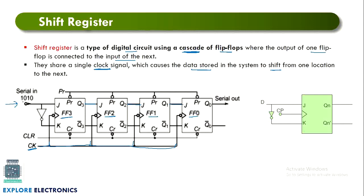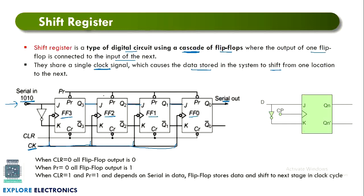We are assigning the data to the first flip-flop as 1010. This data is assigned one bit at a time — one bit per clock cycle. In the next clock cycles, data is transferred from one flip-flop to the next, and finally we get the serial output after four clock cycles from the last flip-flop.